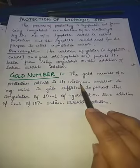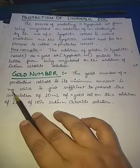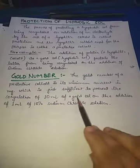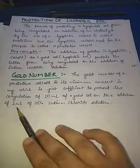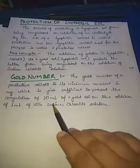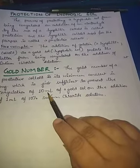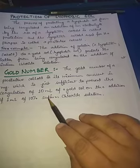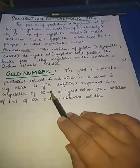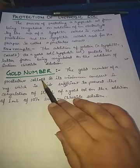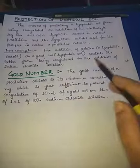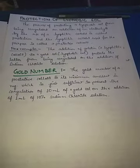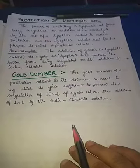The gold number of a protective colloid is the minimum amount in milligrams just sufficient to prevent the coagulation of 10 ml of gold sol on addition of 1 ml of 10% sodium chloride solution. So the minimum amount of protective colloid added in milligrams is called the gold number. This was all about the electrical properties of colloids.